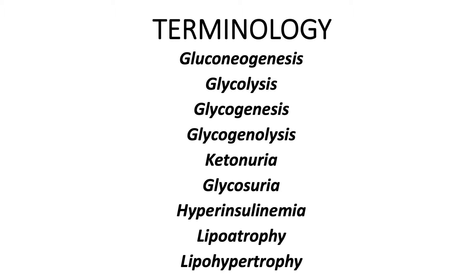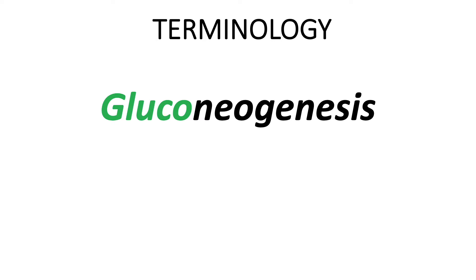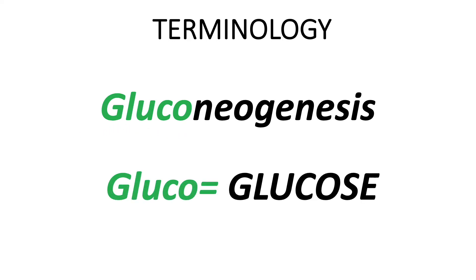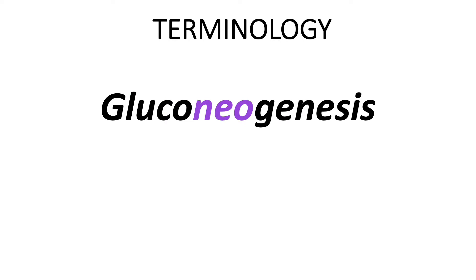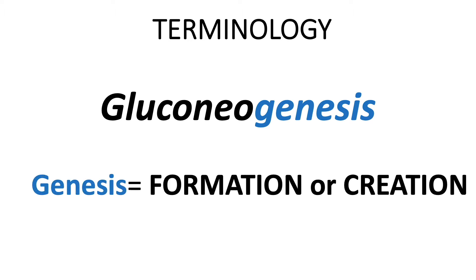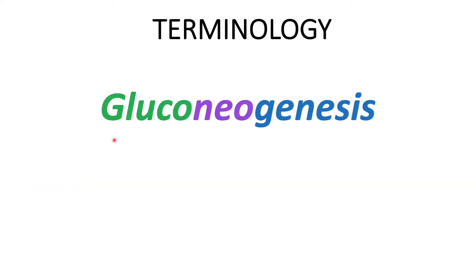The first term is gluconeogenesis. Breaking it down: 'gluco' refers to glucose, 'neo' refers to new, and 'genesis' refers to formation or creation of something. Putting this together, gluconeogenesis simply means the formation of new glucose.